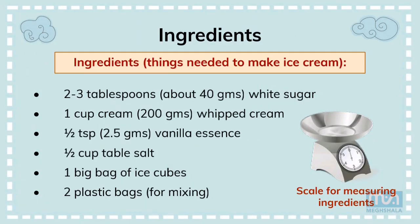Now let us look at the ingredients needed to make ice cream. First, you need two to three tablespoons of white sugar — about 40 grams. Then one cup of whipped cream, about 200 grams. Half teaspoon of vanilla essence — about 2.5 grams — which you can get in the market. Half cup of table salt, one big bag of ice cubes, and two plastic bags for mixing. A scale for measuring ingredients is also shown.